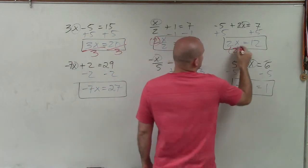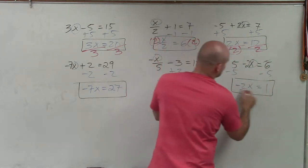Here, I'm multiplying, so I divide by 2. Here, I'm multiplying, so I divide by negative 2.